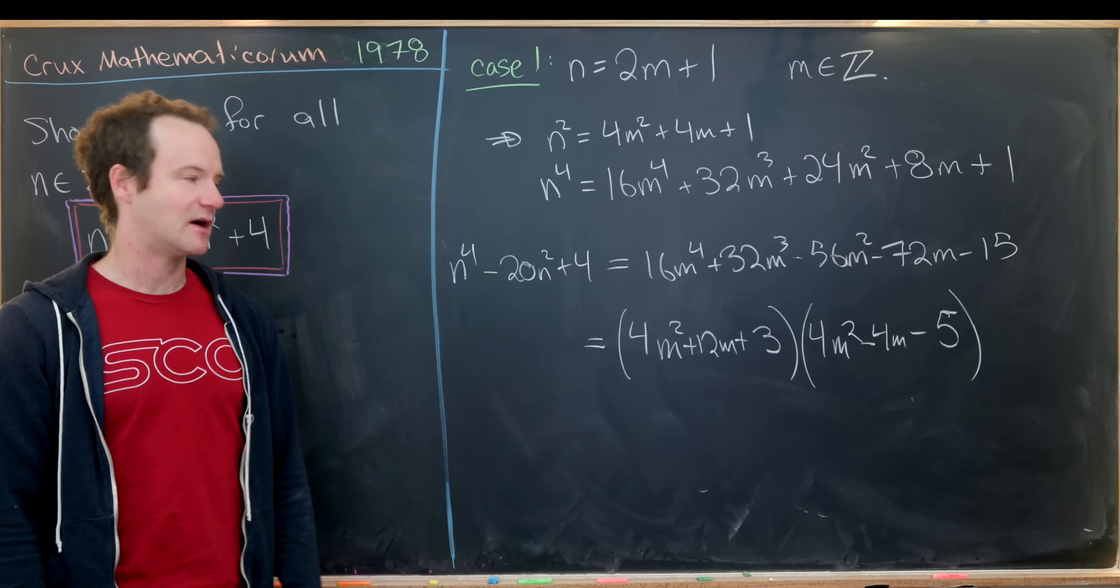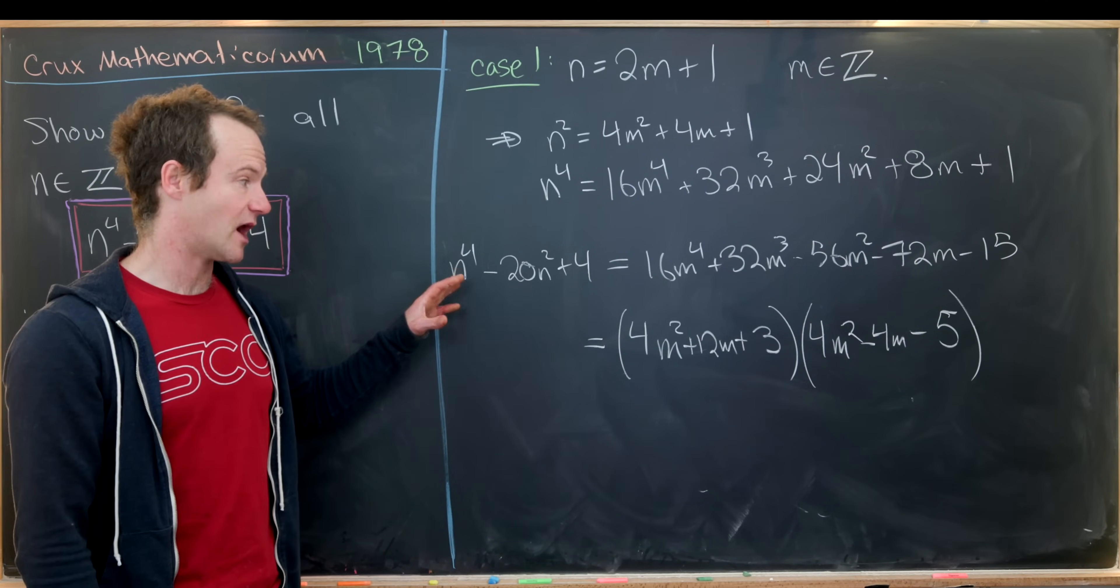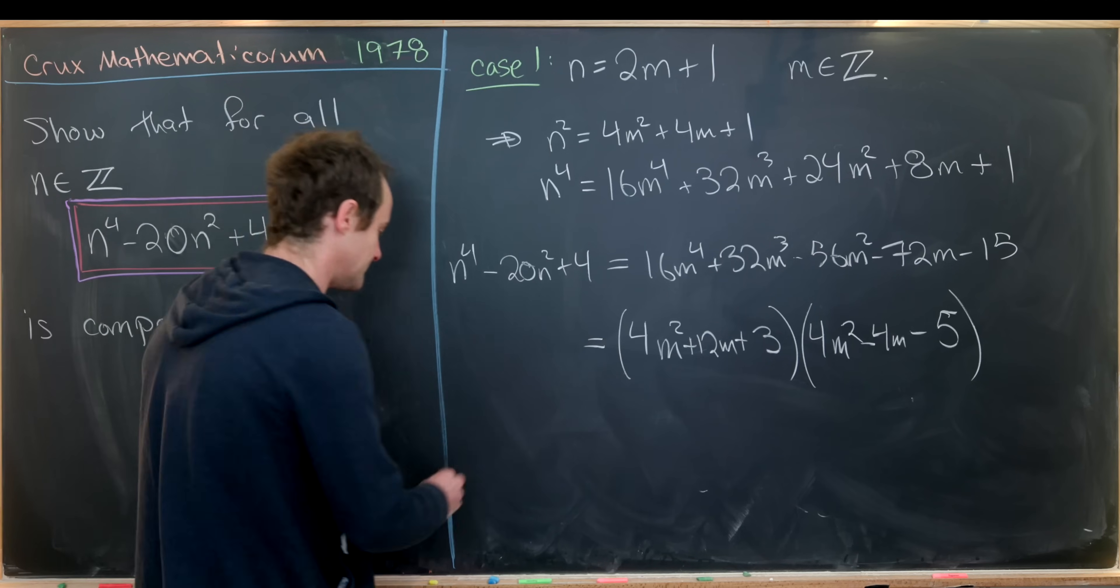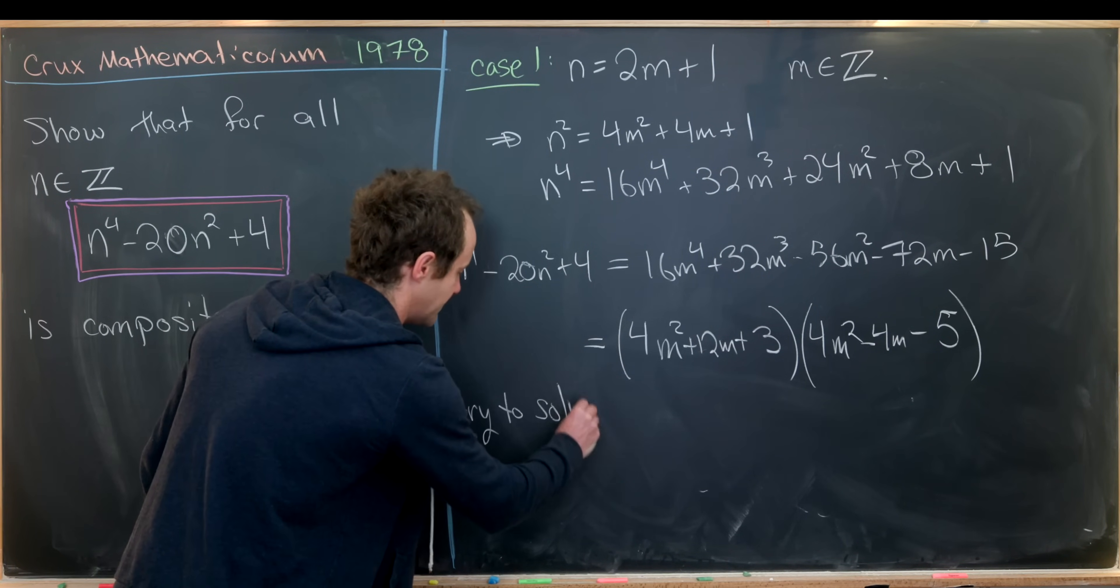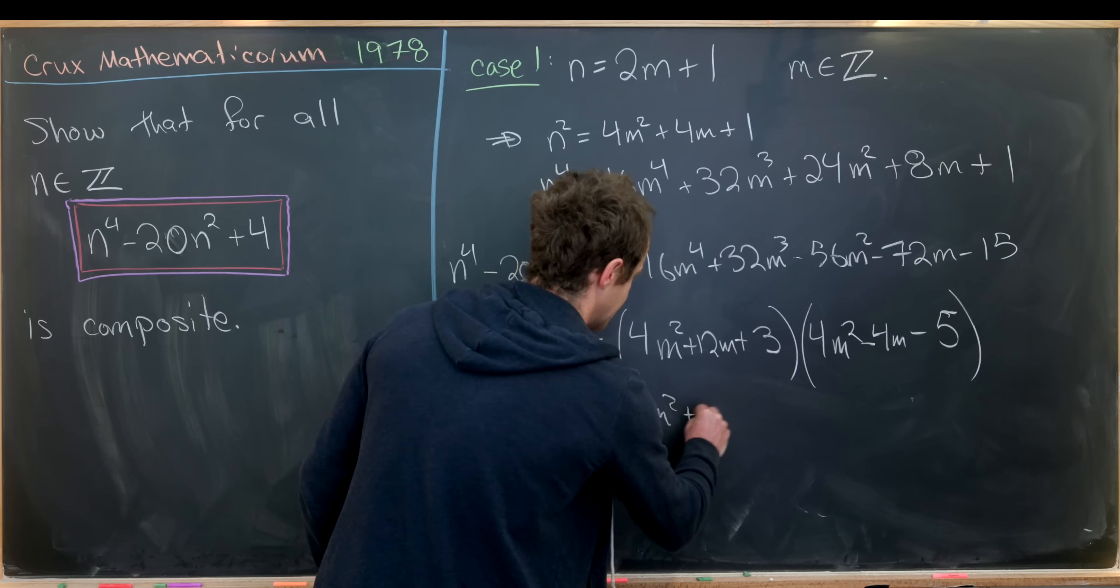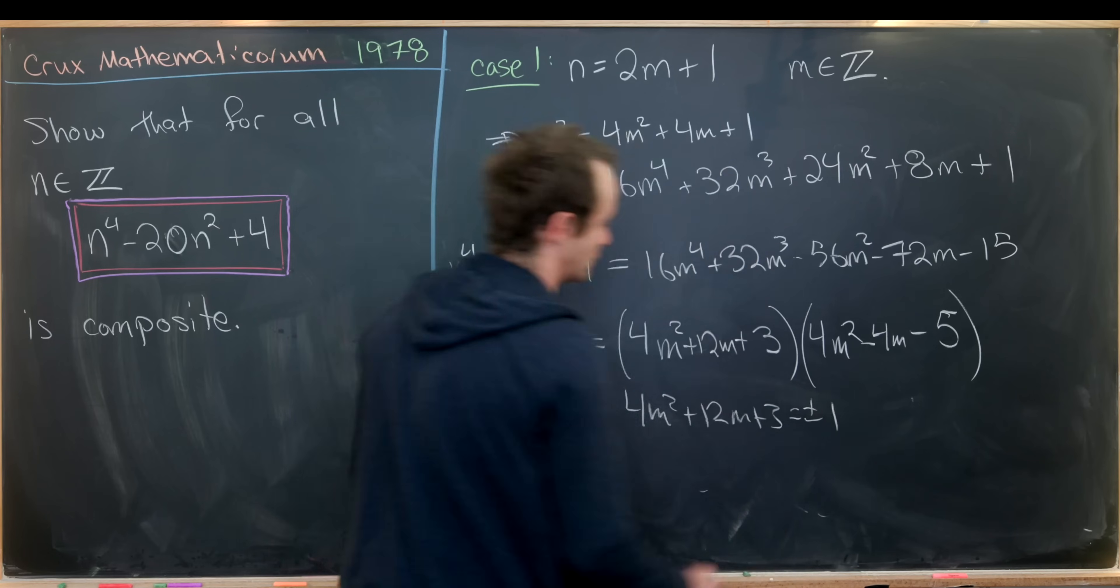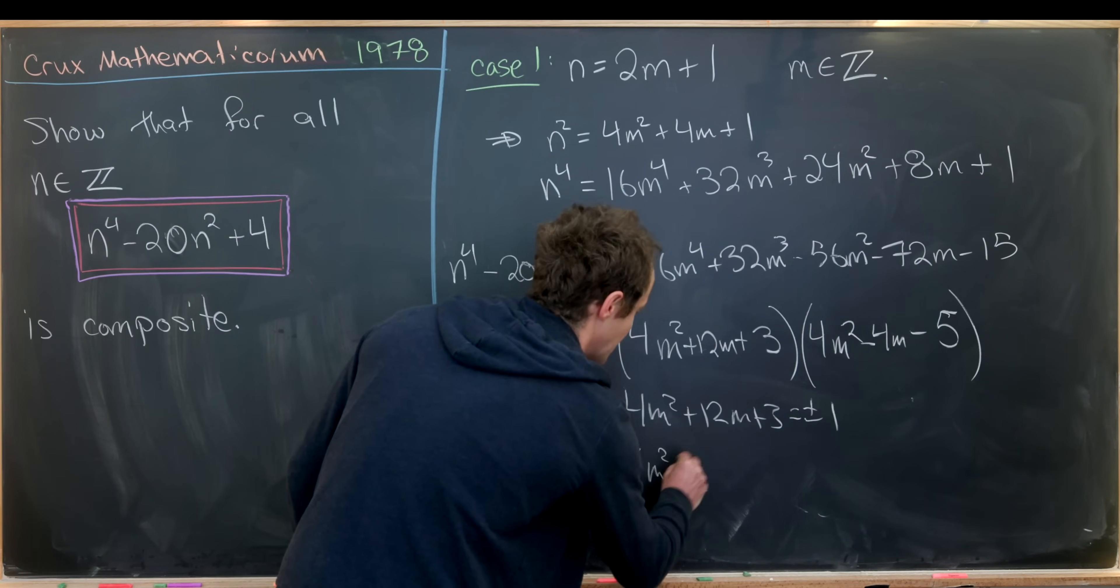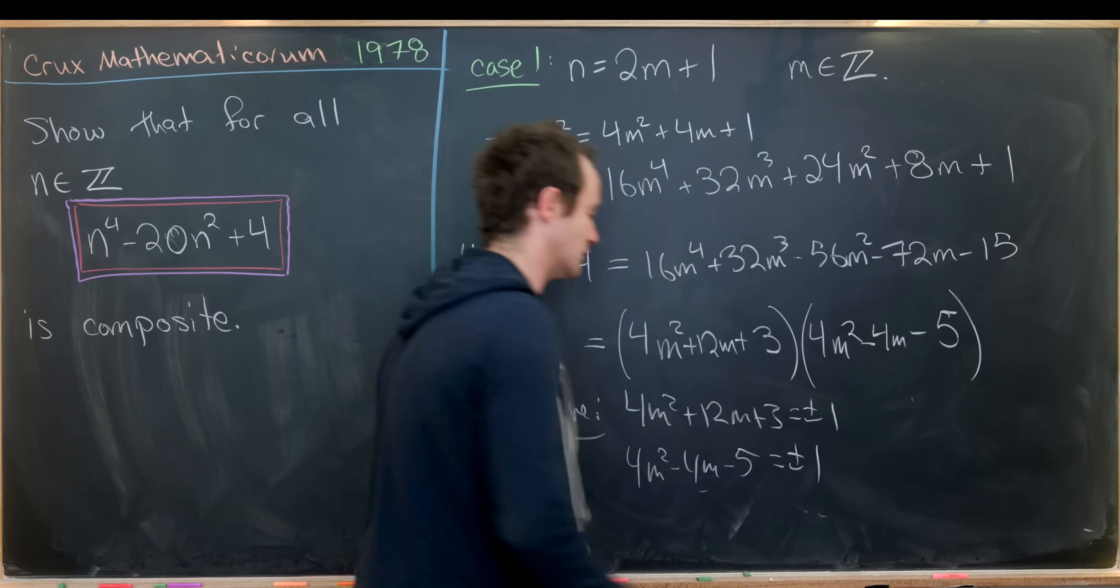Does that mean it's composite? Not yet. Because this object could still be prime if one of these was equal to 1 or negative 1. So that's what we need to do now. Try to solve 4m squared plus 12m plus 3 equals plus or minus 1, and 4m squared minus 4m minus 5 equals plus or minus 1.